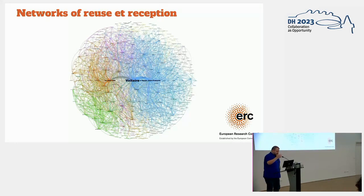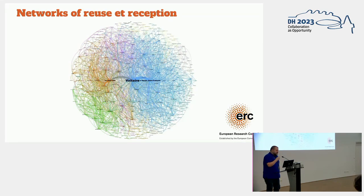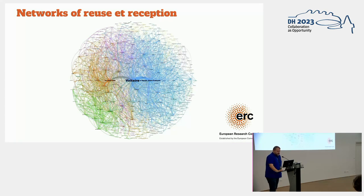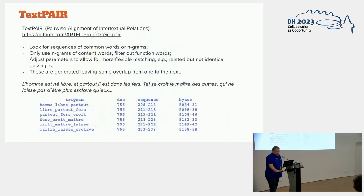If we talk about networks as the obligatory giant hairball, which is our network — our network is a network of reuse and reception. It's based on text reuse, and I'll show you how we get there. This is just one preliminary network, and I'll come back to it later.